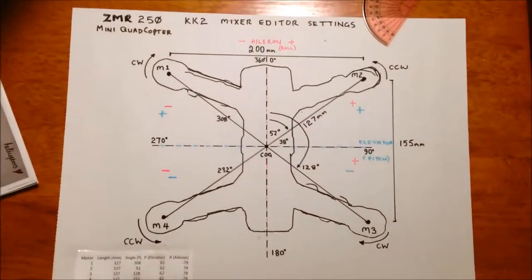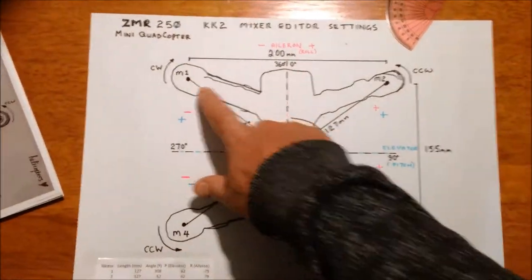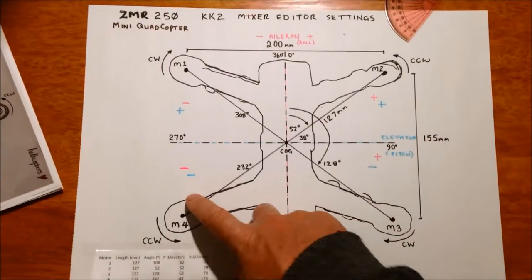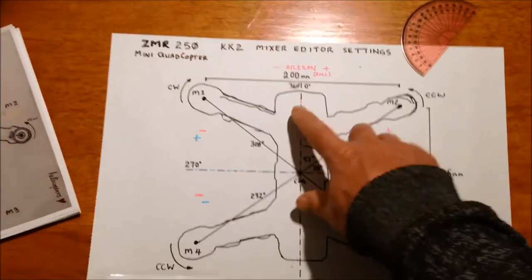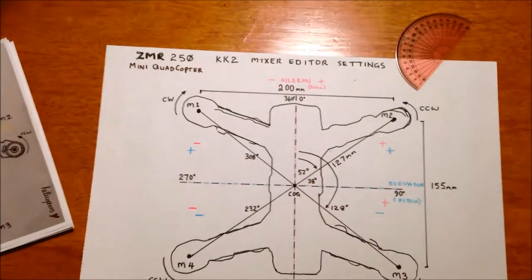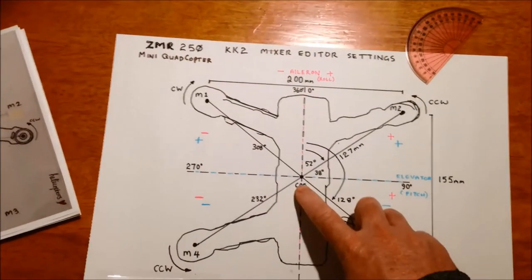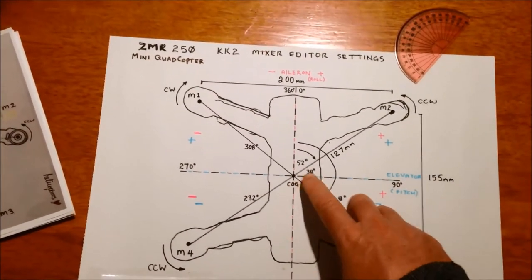So for the KK2, motor 1, 2, 3, 4, same basic principles. You've got your center of gravity, you've got your angles.